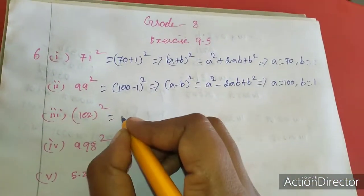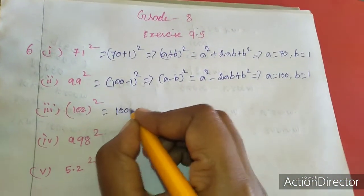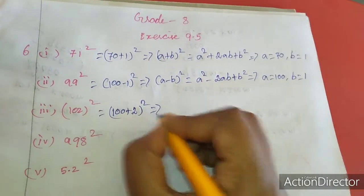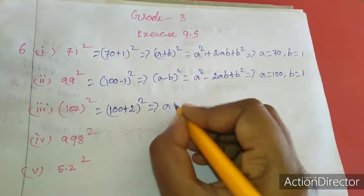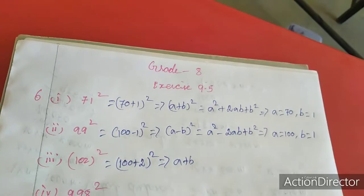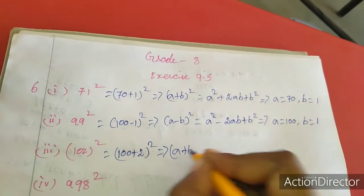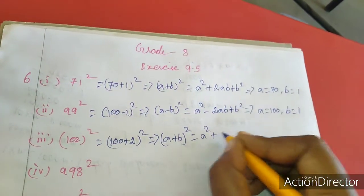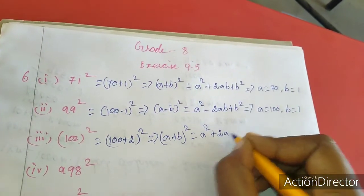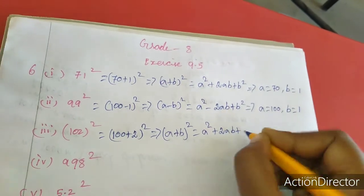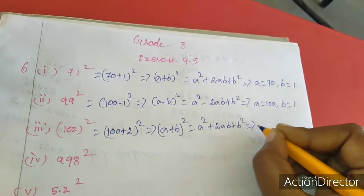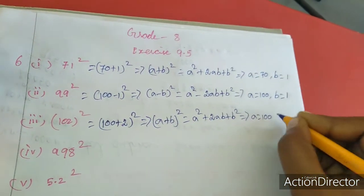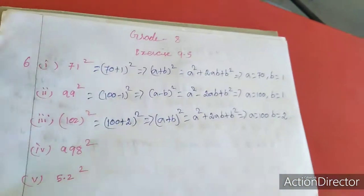Next, 102 squared is written as 100 plus 2, the whole square. We use the a plus b whole square formula: a squared plus 2ab plus b squared. Here a value is 100 and b value is 2.